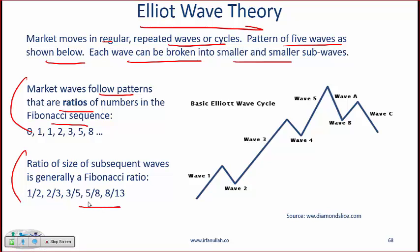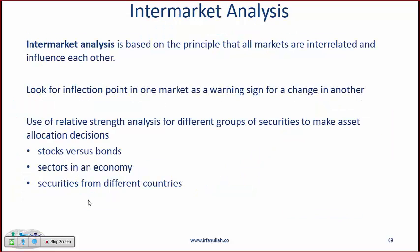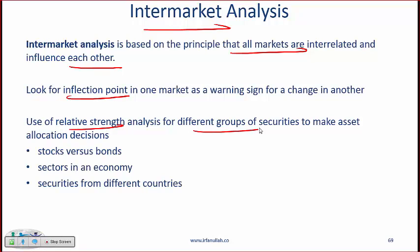The final topic is intermarket analysis, based on the principle that all markets are interrelated and influence each other. You look for inflection points in one market as a sign for what will happen in another. This involves relative strength analysis for different groups of securities to make asset allocation decisions — for example, comparing stock indices versus bonds, the interaction of different sectors in the economy, and stock markets from different countries.